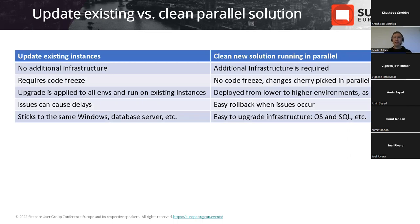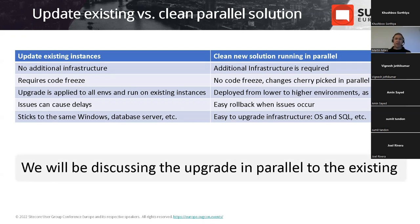When upgrading software there are two primary approaches. The first is upgrading existing instances — the upgrade is applied to all existing environments. The second is a clean approach, where you create a clean environment in parallel, then move data and fix compatibility issues — essentially a lift-and-shift. My preference is always to start with a clean vanilla instance of the target version running in parallel, and this session will focus on that parallel upgrade scenario.